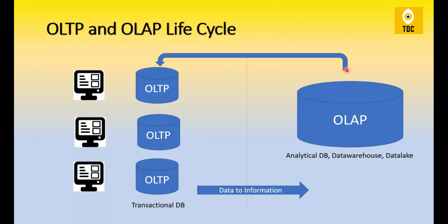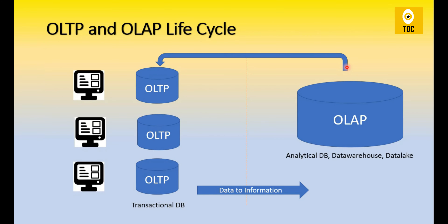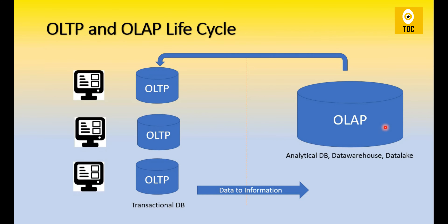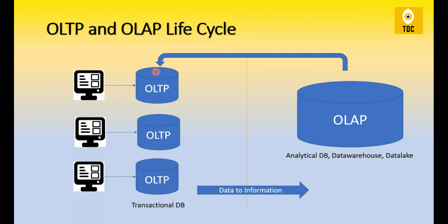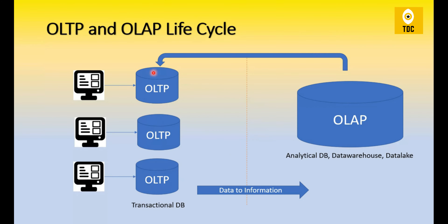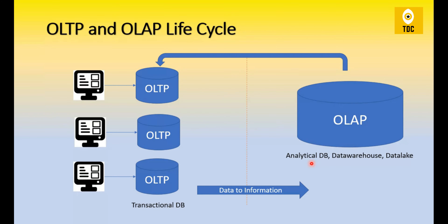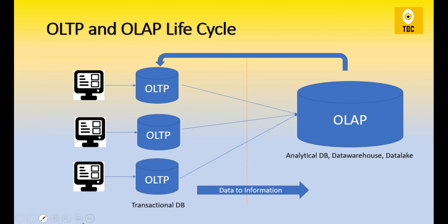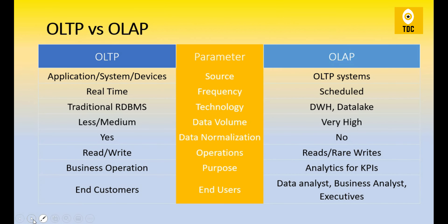There are also cases where you write some data back from OLAP to OLTP. These are rare scenarios, but organizations do this — for example, when you perform analytics and generate master data that applications need to use. In OLTP, data is like raw data, and once it flows to OLAP it becomes information because analytics and reports or dashboards are built on top of it.